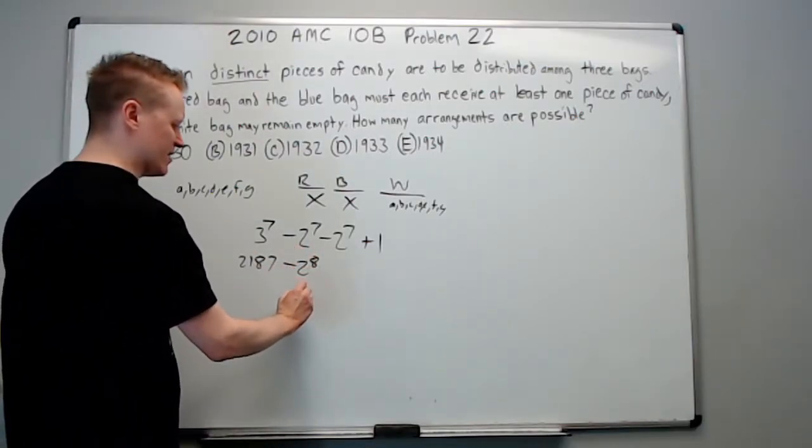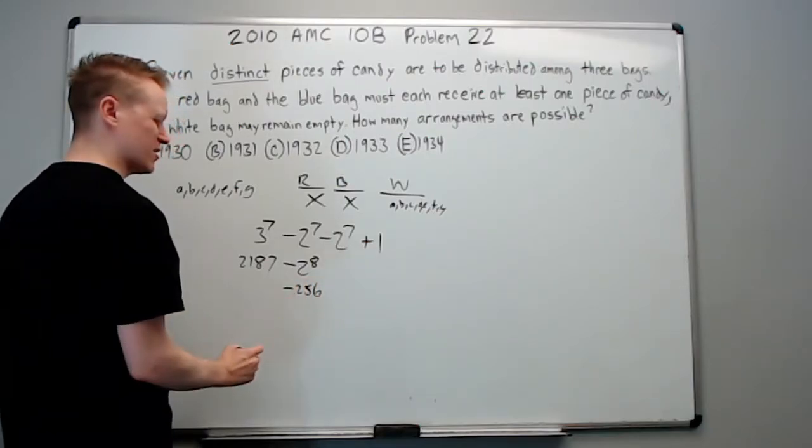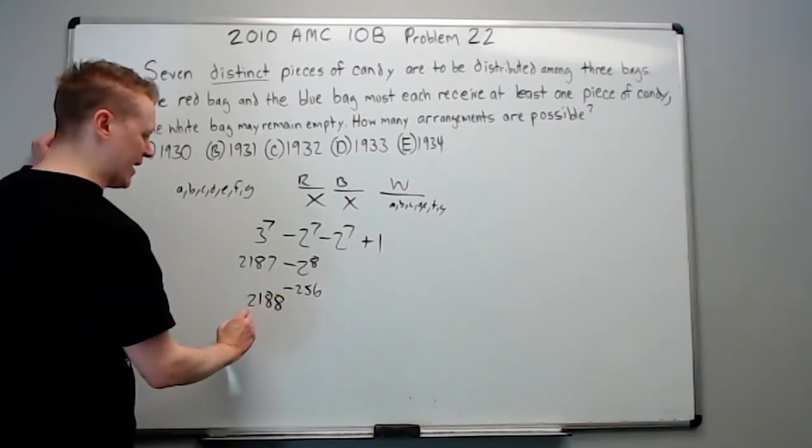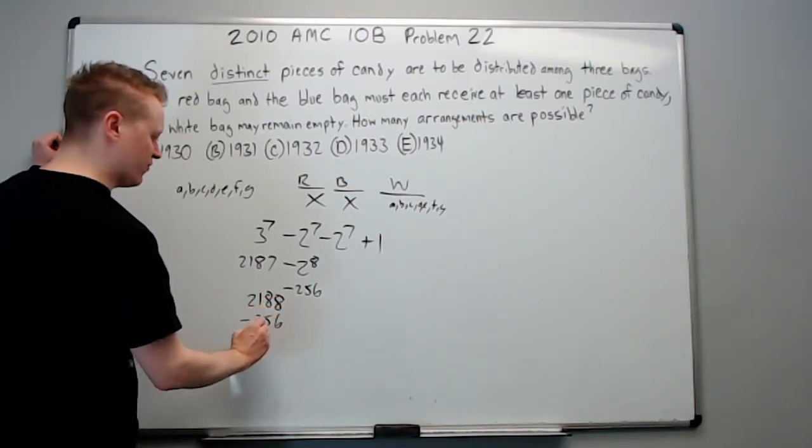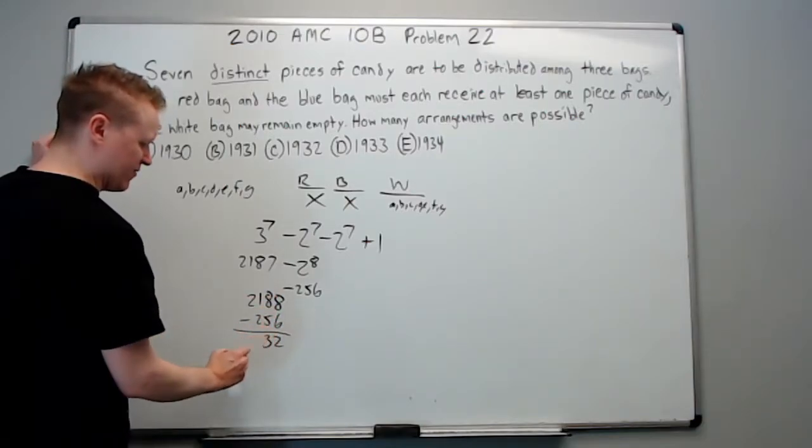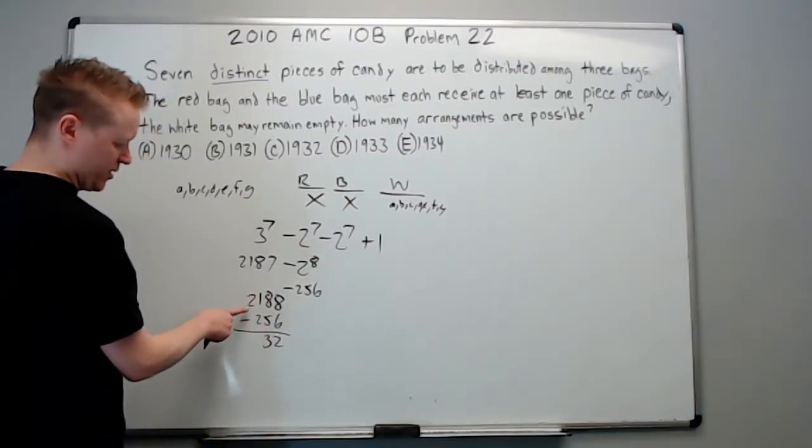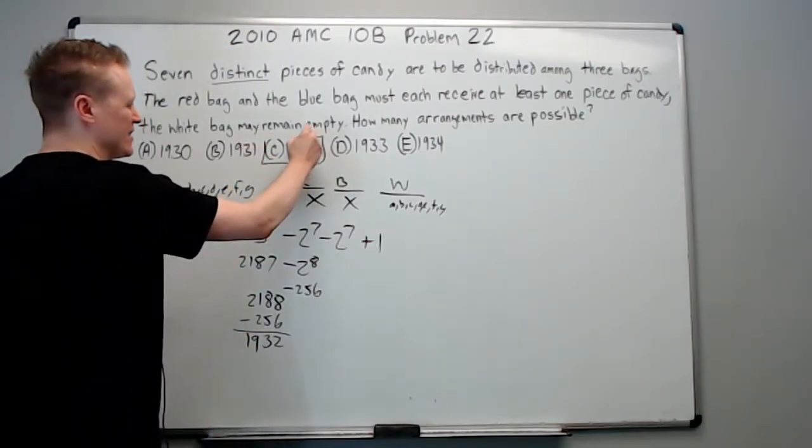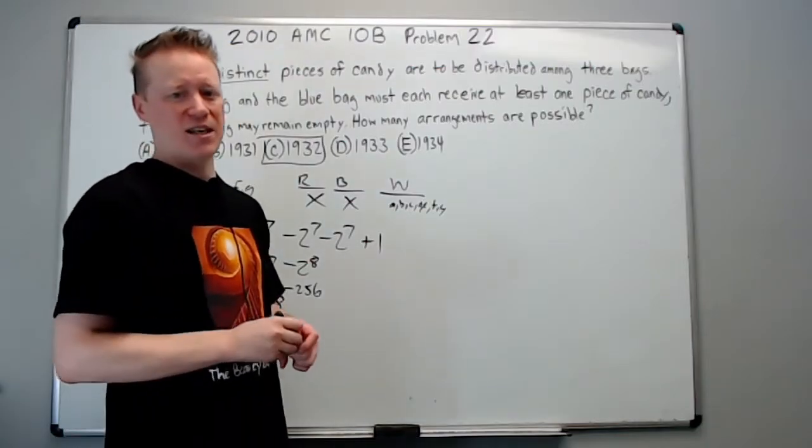So two to the seventh times two is really two to the eighth. Two to the eighth is 256. So I want to subtract 256. I'm going to add this one to get 2188 minus 256. So eight minus six is two, eight minus five is three, 21 minus two is going to be 19. It will be 1932. See you in the next one.